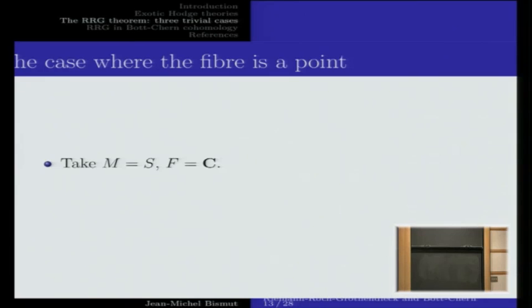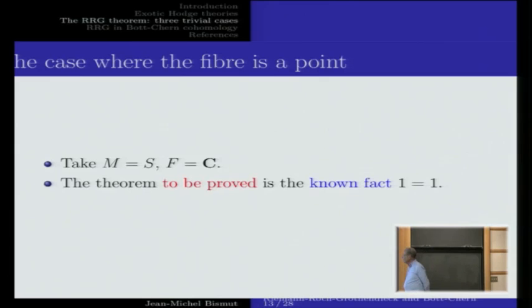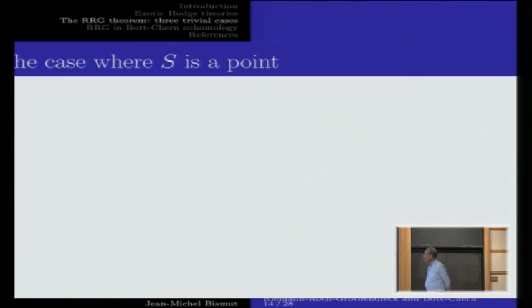In the first case where the fiber is a point: I take M = S, F the trivial line bundle, and the theorem to be proved in this case is the known fact — at least to this audience — that 1 = 1.